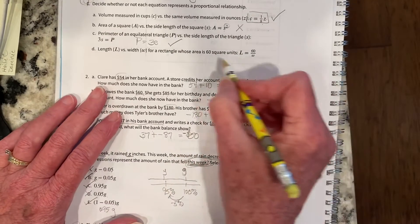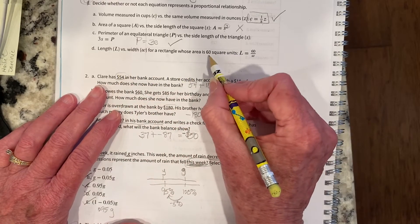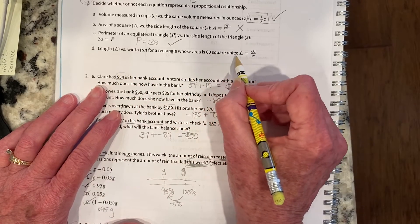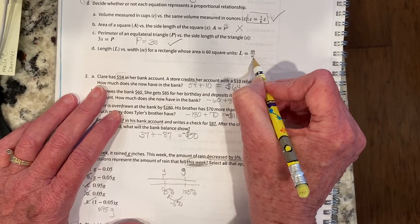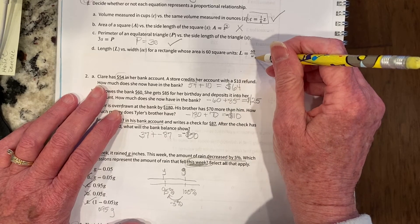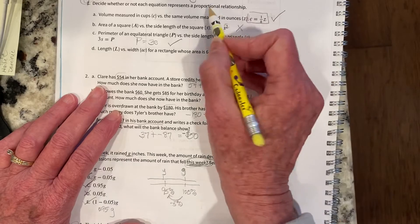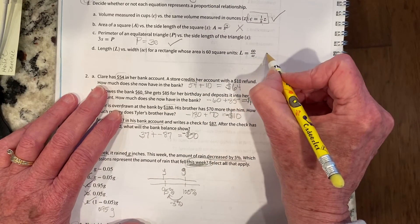And the last one. We have the length versus the width of a rectangle whose area is 60 square units. So we have the length equals 60 divided by the width. Well, this is 60 divided by the width, so that is dividing by the W instead of multiplying by the constant there. So this is no.